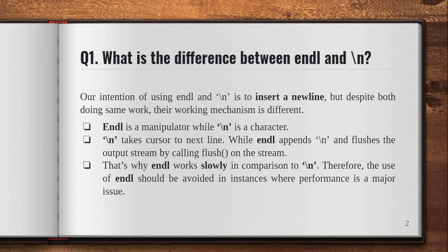Let's see our first assignment. The question was: what is the difference between endl and backslash n? Our intention of using endl and backslash n is to insert a new line, but despite both doing the same work, their working mechanism is different. Endl is a manipulator while backslash n is a character. Backslash n takes the cursor to the next line, while endl appends backslash n and flushes the output stream by calling flush on the stream. That's why endl works slowly in comparison to backslash n, and its use should be avoided where performance is a major issue.